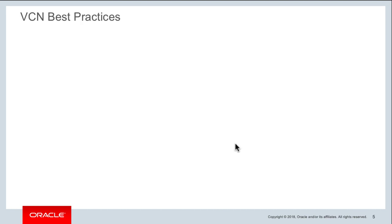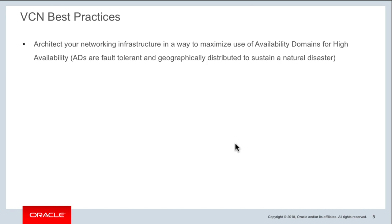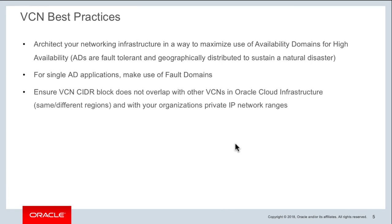For VCN best practices: when creating or designing your networking infrastructure, maximize your use of availability domains for high availability. Availability domains are physically isolated and do not share resources like power and networking, making the likelihood of multiple ADs failing within a region very small. If your application is a single-AD-based application, make use of fault domains — a grouping of hardware and infrastructure within a single availability domain. Each AD contains three fault domains, letting you distribute instances so they are not on the same physical hardware.